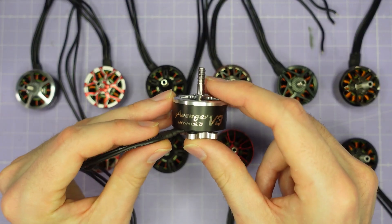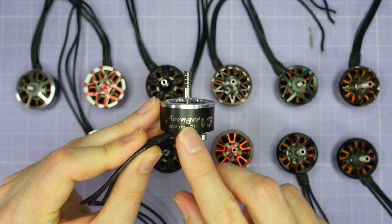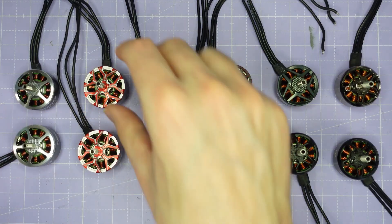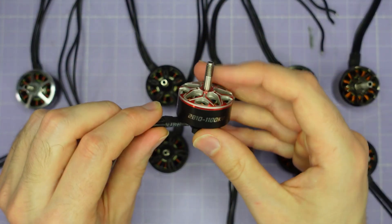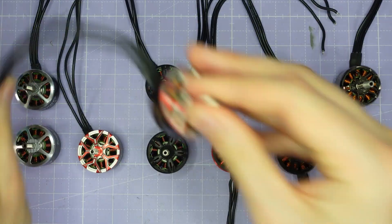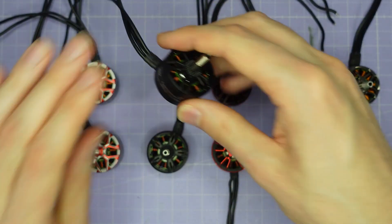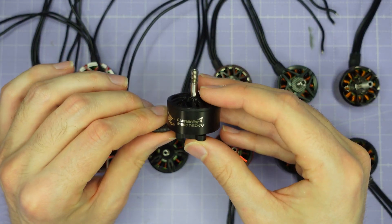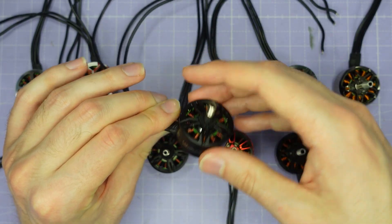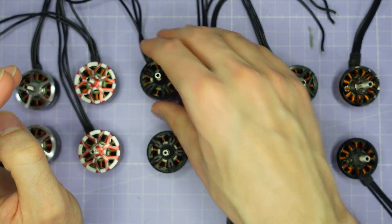Let me take you on a whistle stop tour of the motors we're going to be testing today. We've got a couple from Brother Hobby, these are the Avenger V3s, the 2812 in 1115 kV and the 2810 in 1180 kV. From Dolphin RC we have their 2810 and 2812 both 1100 kV. From Lumineer we have the Zip V2 in 1150 kV and 1300 kV, both in the 2812 size, so it'll be interesting to see how the higher kV version performs.